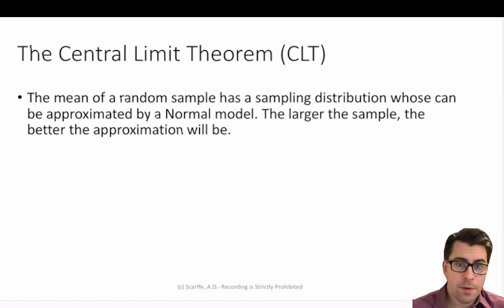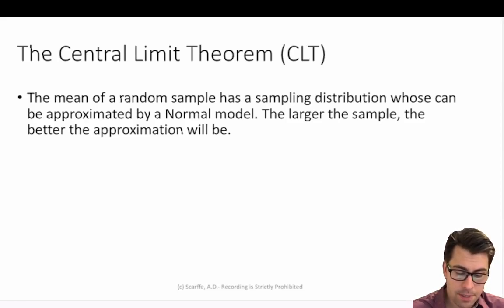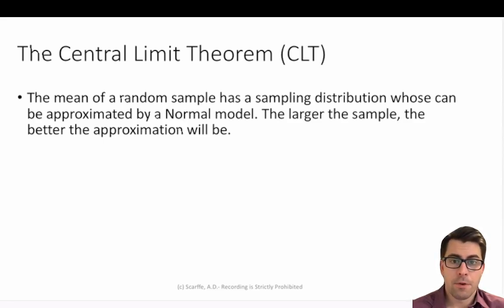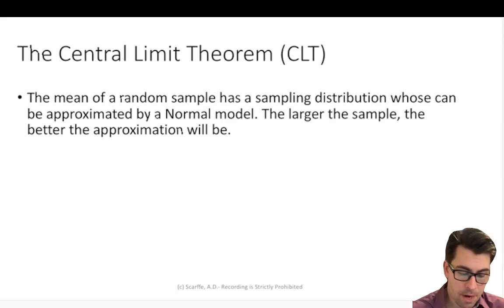This all builds into the central limit theorem: the mean of a random sample from a sampling distribution can be approximated by the normal model, and the larger the sample, the better the approximation will be. In other words, the larger the sample, the closer to the true proportion of the population we can expect. Simply by measuring more people, we can expect a closer proportion of the sample relative to the true population.